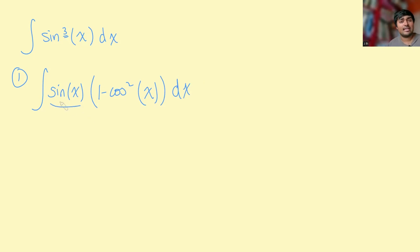Sine x is the derivative of cos x, apart from the negative sign in front, but that's fine. We can always just bring that to the front of the integral. So that motivates us to do a substitution here, because this expression here, one minus cos squared x, is a function of cos x. So we're going to say let u equal cos x.